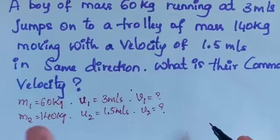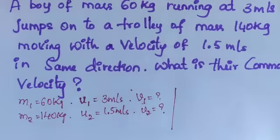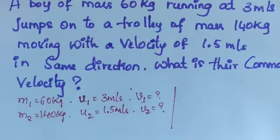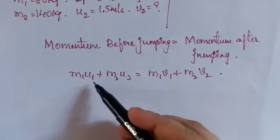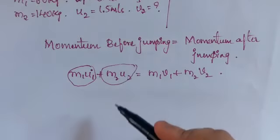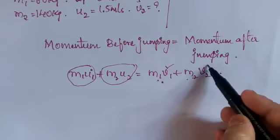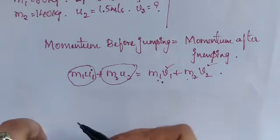After the boy jumps onto the trolley, his velocity will be the same as the trolley's velocity — that is, V1 equals V2 equals V. To find this, we use the law of conservation of momentum: momentum before jumping equals momentum after jumping. So M1·U1 plus M2·U2 equals the total final momentum.